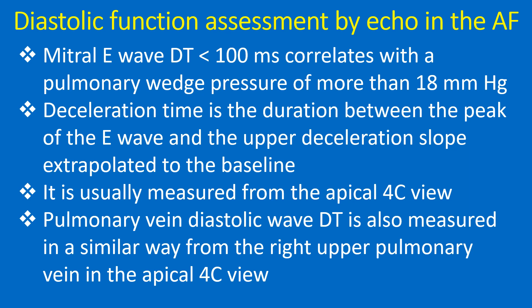Mitral E-wave DT less than 100 ms correlates with a pulmonary wedge pressure of more than 18 mmHg. Deceleration time is the duration between the peak of the E-wave and the upper deceleration slope extrapolated to the baseline, usually measured from the apical 4-chamber view. Pulmonary vein diastolic wave DT is also measured in a similar way from the right upper pulmonary vein in the apical 4-chamber view.